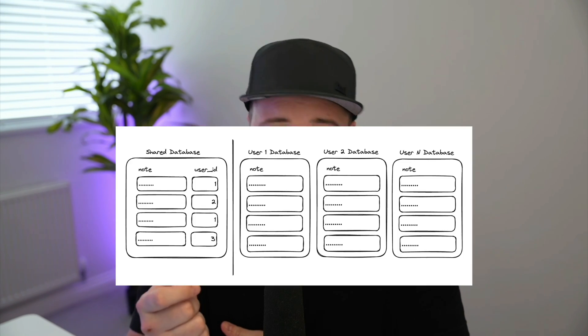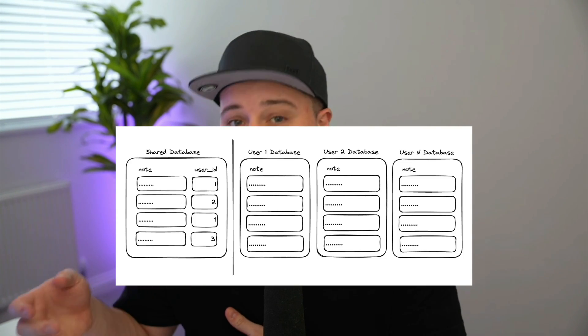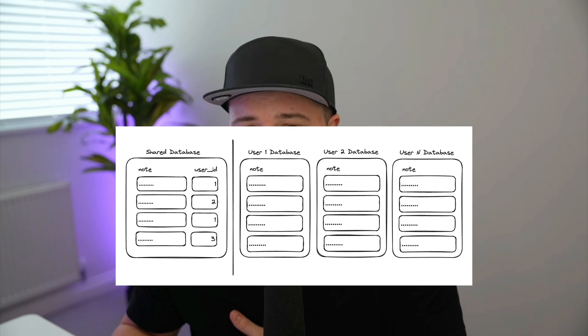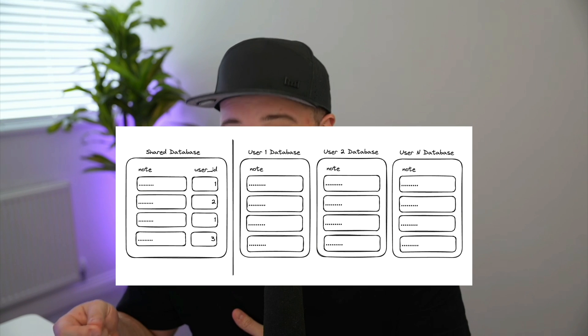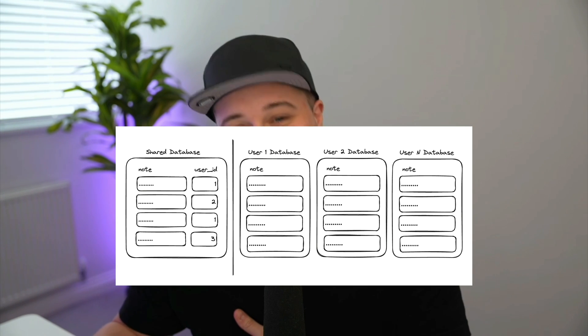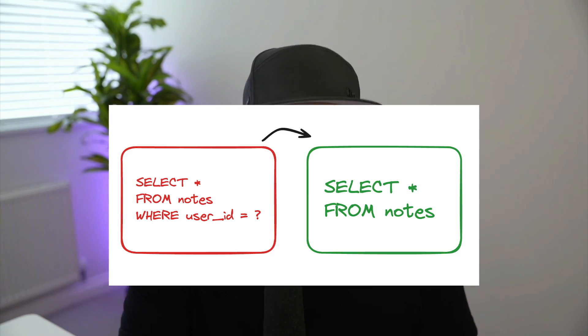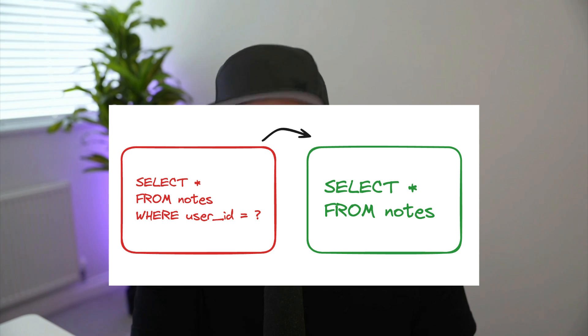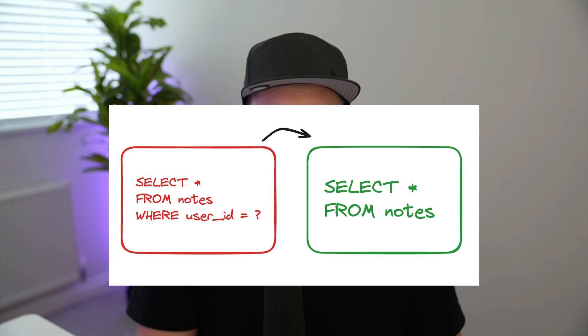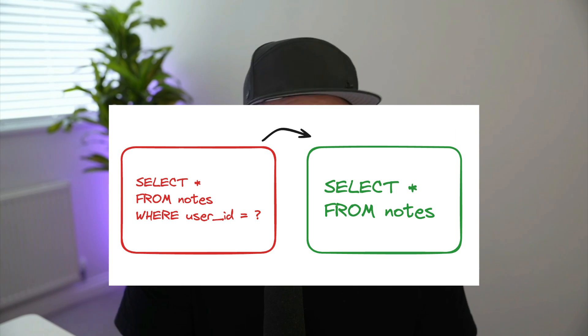If I was going to pull this off — migrating from a single database to a per-user database — I needed to drop the user ID column and create some kind of database that could be used as a template. I've had my fair share of fixing bugs caused by a missing WHERE statement, so it felt pretty good to be able to remove it, even if it was scary.